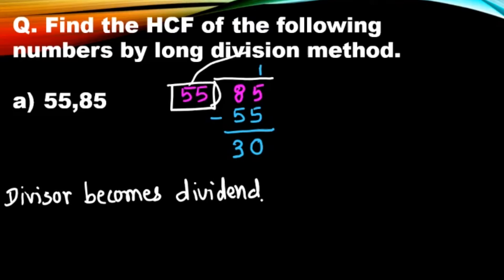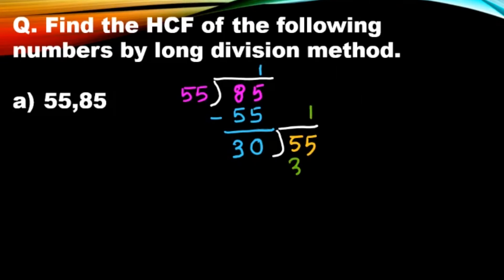So here, divisor is 55 and it will become now the dividend, and 30 is the divisor, which was the remainder here. 30 ones are 30, and again we got the remainder 25. We have to repeat the rule that divisor becomes dividend.